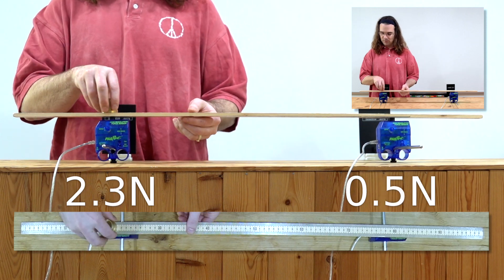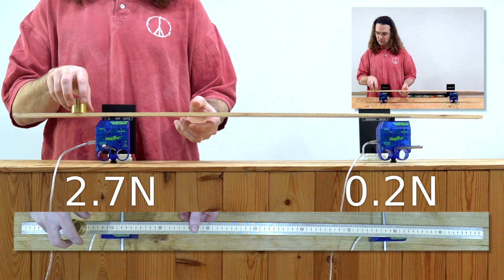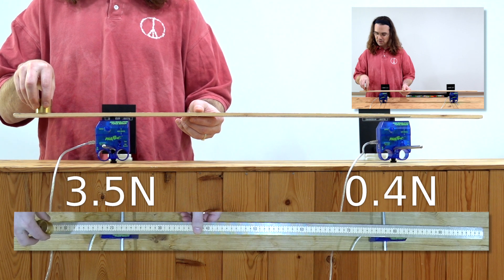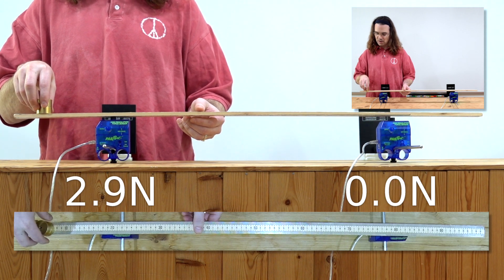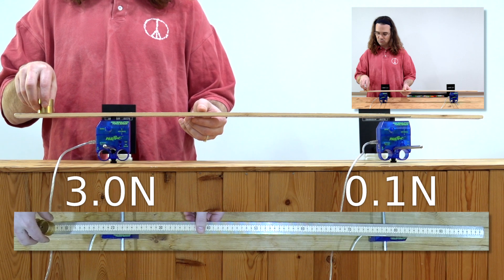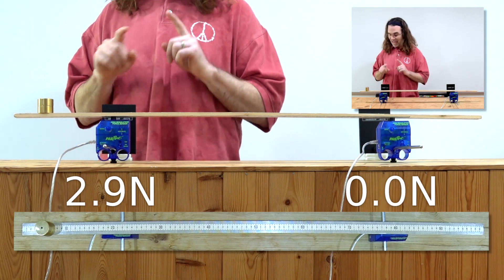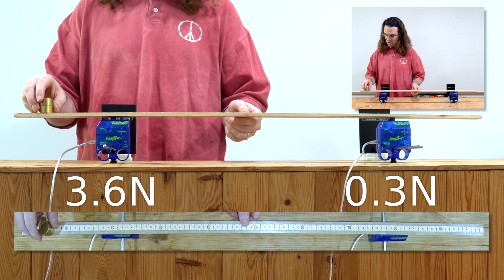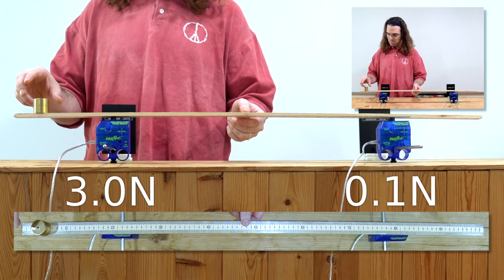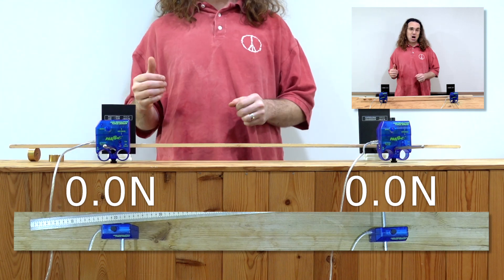And eventually we will get to the point where the painter is so far to the left that the normal force on the right is decreased down to zero. And if the painter moves any farther to the left, the scaffold will be unbalanced and the painter will fall.